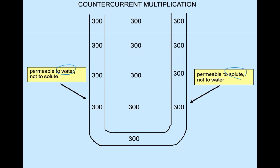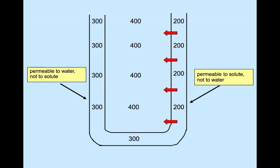Solute is actively pumped out of the ascending limb, lowering its intraluminal osmolality from 300 to 200 and raising interstitial osmolality from 300 to 400.